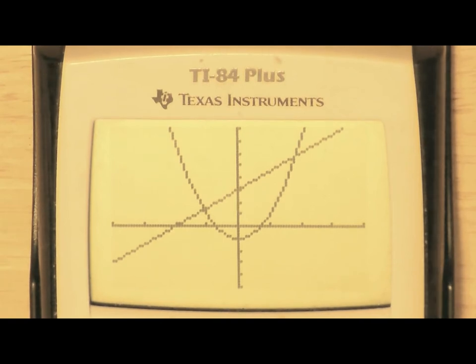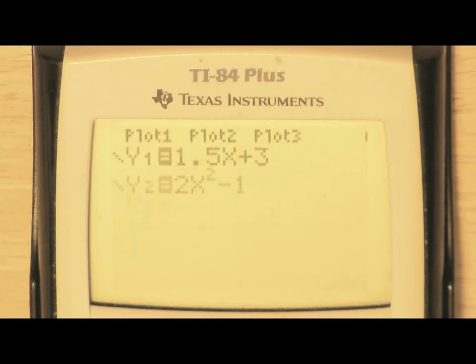Today we're going to use a graphing calculator to aid us with piecewise functions, proving their continuity using Cauchy. Here are the equations to work with: 1.5x plus 3 and 2x squared minus 1.